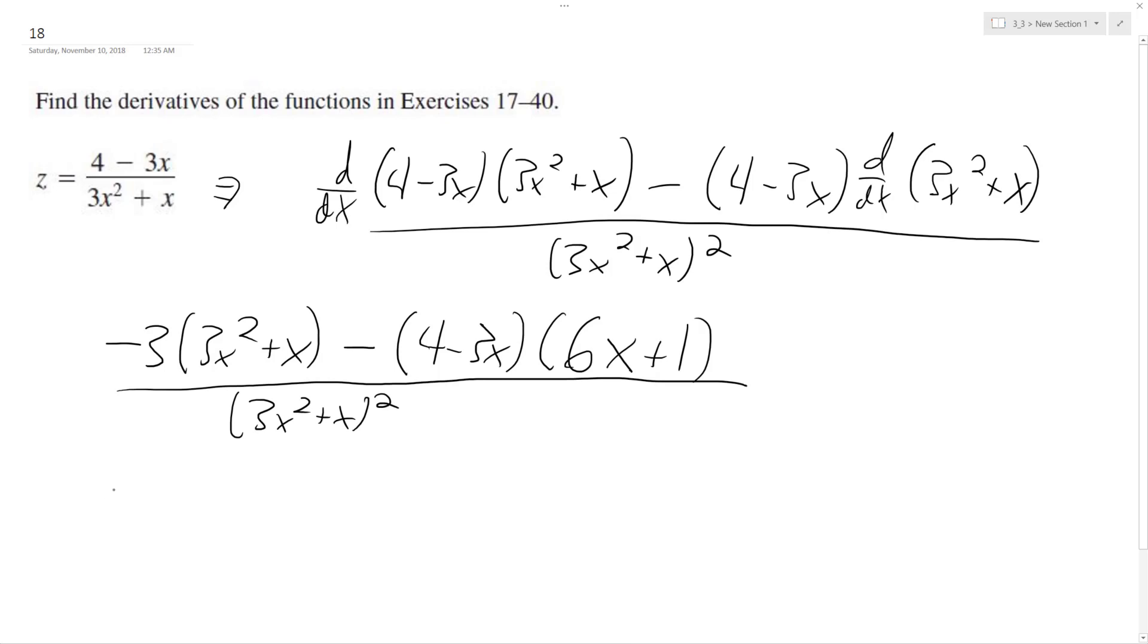So what we're going to end up with here is negative 9x squared minus 3x, foiling, minus 24x. I've got to make sure to distribute this minus sign. Minus 4 minus negative 18x, so plus 18x squared, plus 3x.